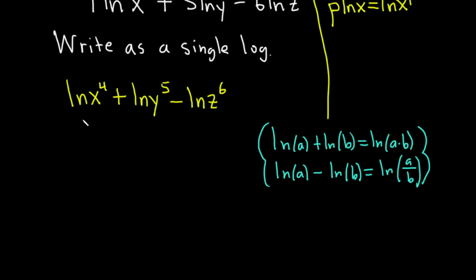So let's do it in steps. Let's start by working left to right. We'll use the product rule here first. This will be the natural log of, so a, that's going to be our x to the fourth, times b which is y to the fifth. And then we still have this piece here hanging out, so minus the natural log of z to the sixth.